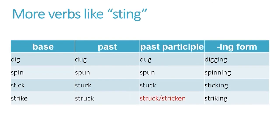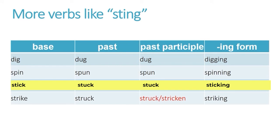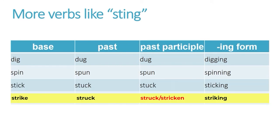Some more verbs fit this particular pattern — verbs like 'sting' that don't have an -NG ending but follow the same pronunciation pattern, shifting from an 'e' or 'ih' sound to an 'uh' sound in both the past and past participle. For example: dig, dug, dug; spin, spun, spun; stick, stuck, stuck; strike, struck, struck. With 'struck,' sometimes we also use the past participle 'stricken.'